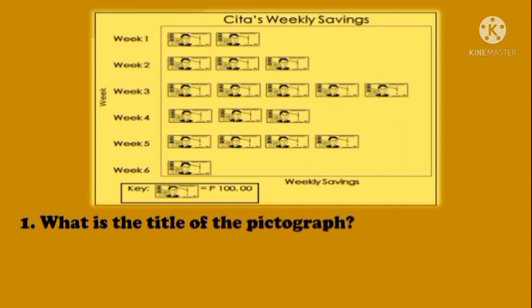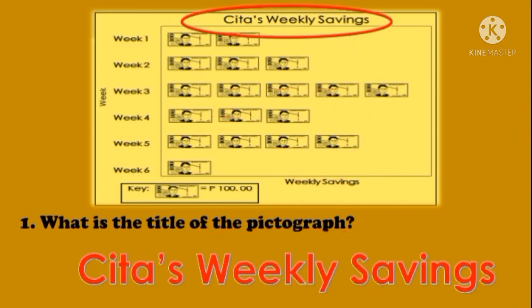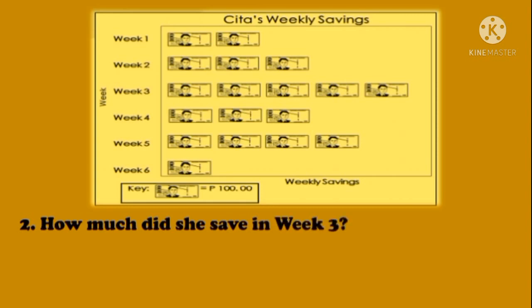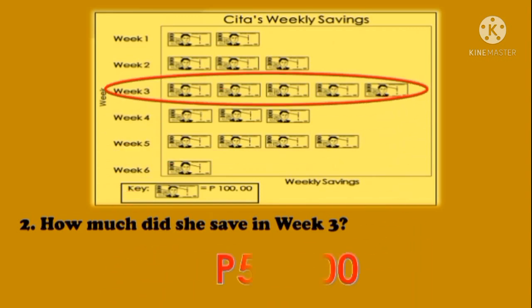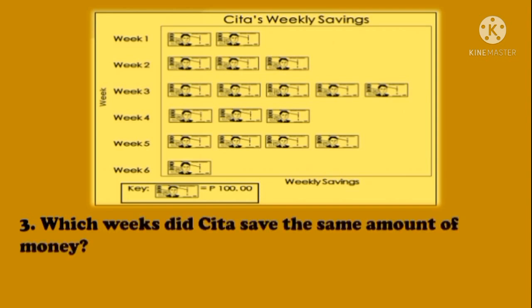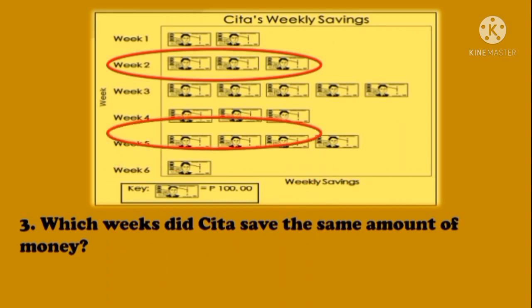Question 1: what is the title of the pictograph? The answer is 'Sita's Weekly Savings.' Question 2: how much did she save in week 3? She saved 500 pesos. Question 3: which weeks did Sita save the same amount of money? The answer is week 2 and week 4 — both at 300 pesos.